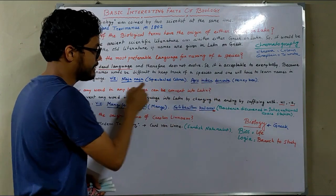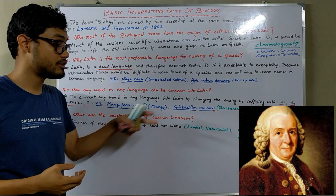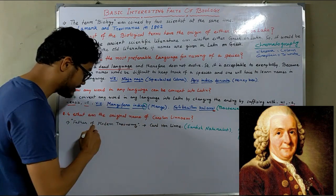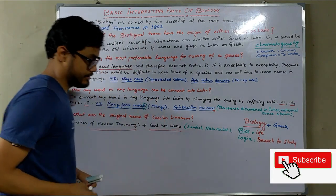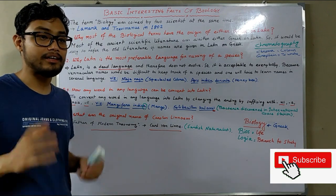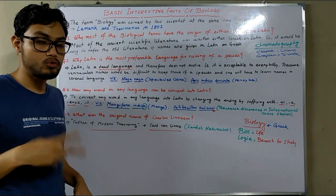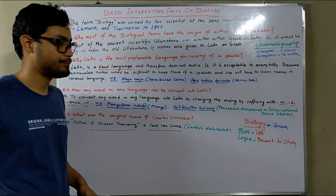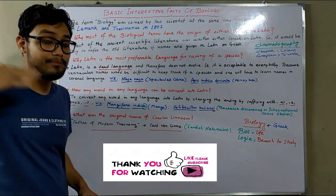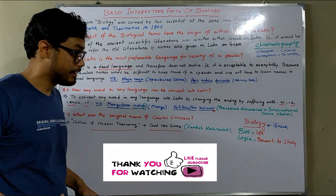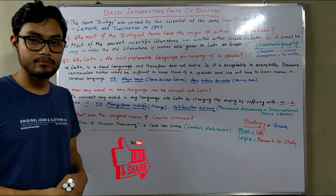An interesting question: what is the original name of Carolus Linnaeus? Carolus Linnaeus was a Swedish naturalist, also known as the father of modern taxonomy. His actual name was Carl von Linné. In the process of binomial nomenclature, he first converted his own name from three words to a Latinized two-part form — Carolus Linnaeus — and then proceeded to apply the same system to every species known at that time. I hope this information helps you understand the basic facts of biology. If you like the video, please hit the like button and don't forget to subscribe.